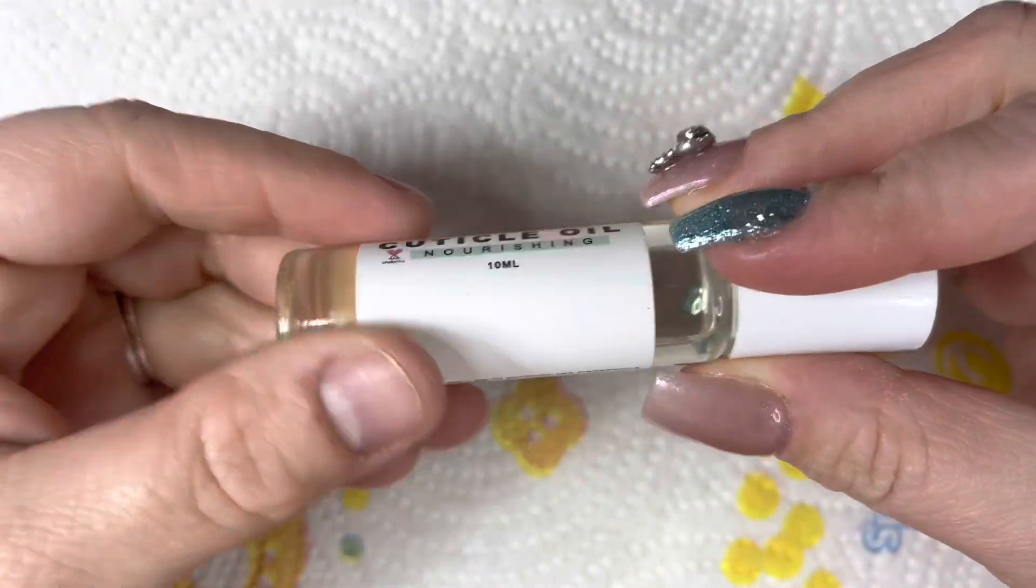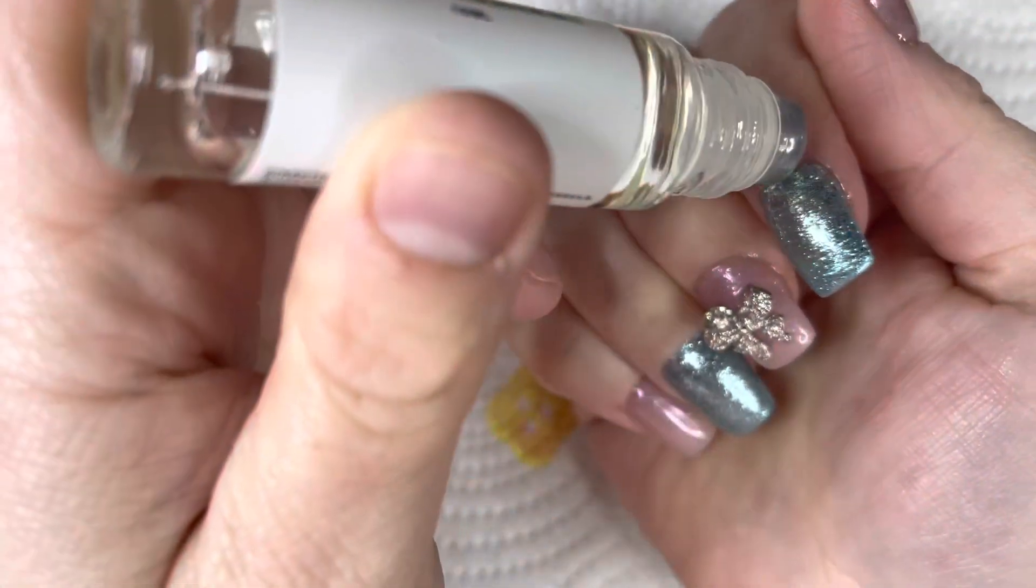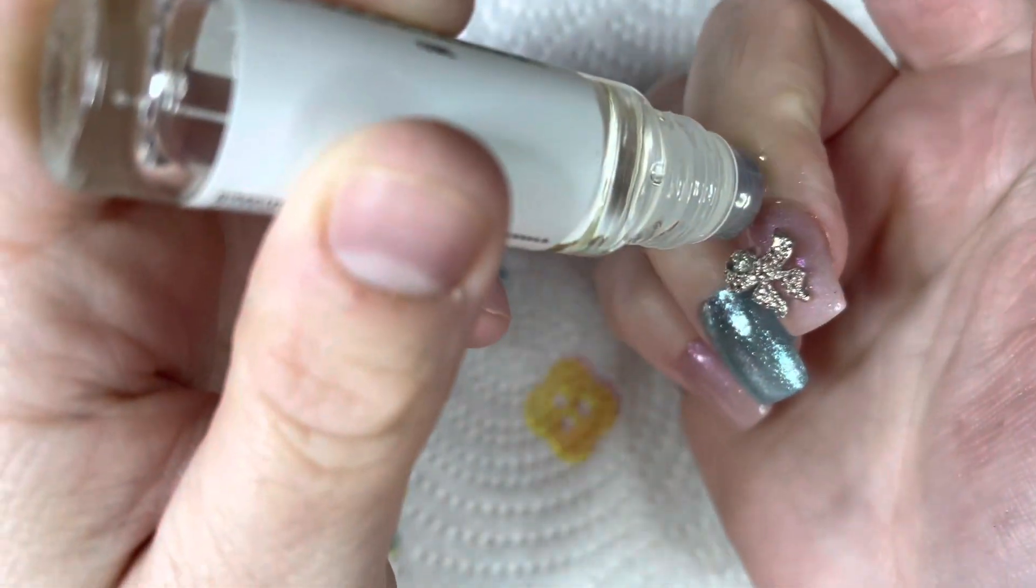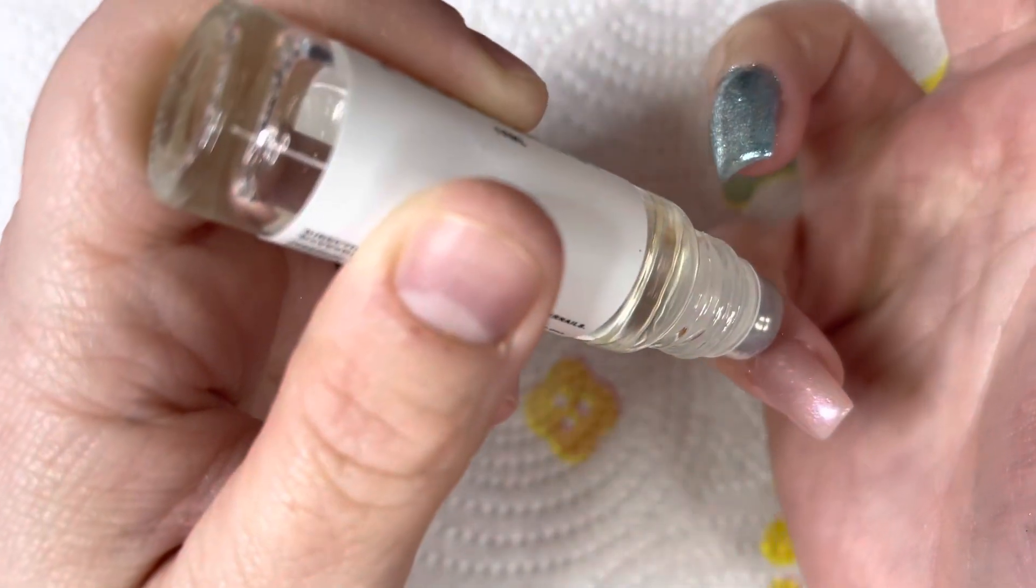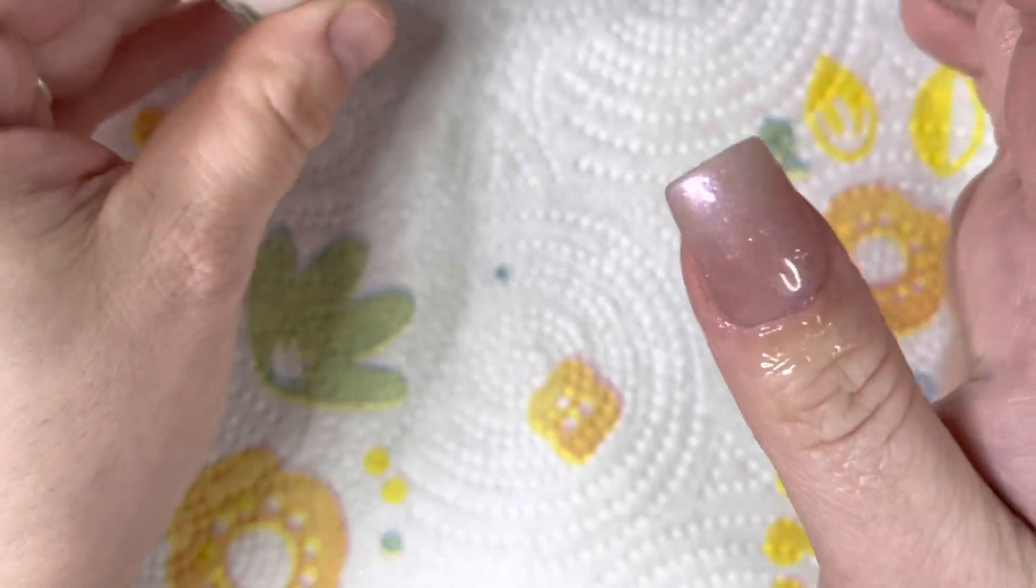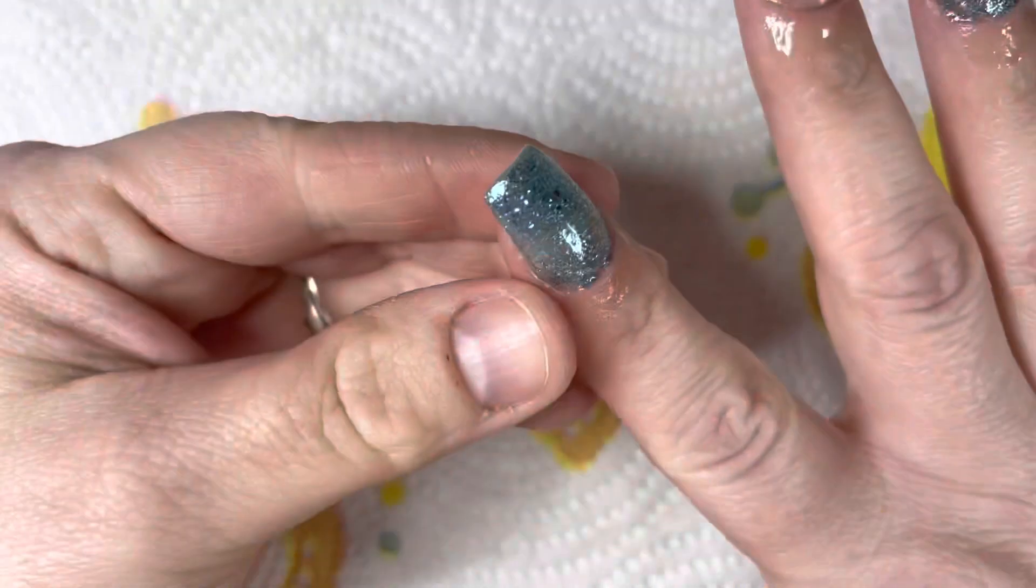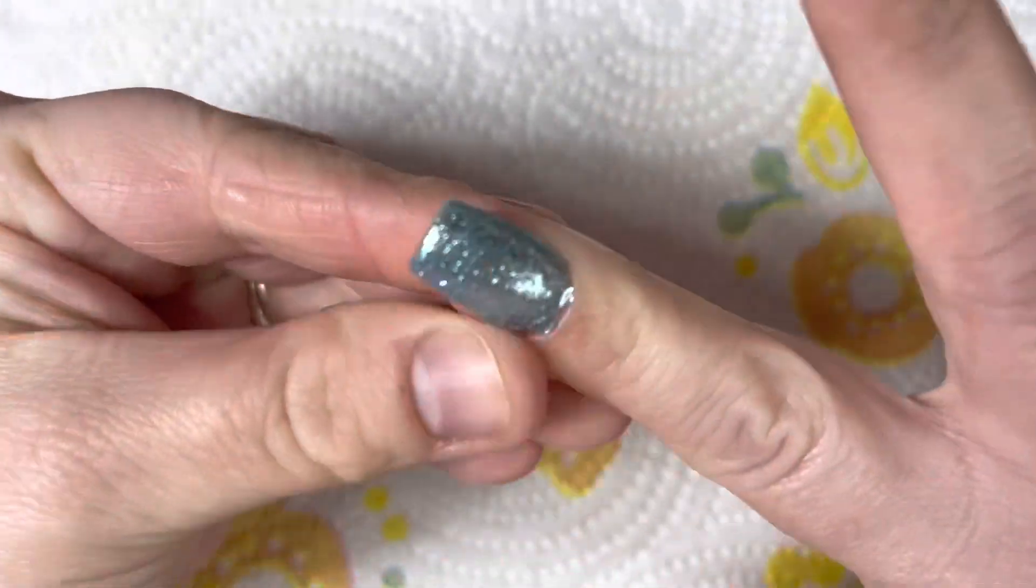All finished up. This is my favorite cuticle oil. You can probably get cuticle oil at the Dollar Tree for a dollar. But the acrylic kit was so nice to work with. I absolutely love how this set turned out.